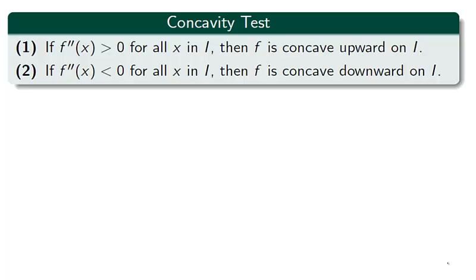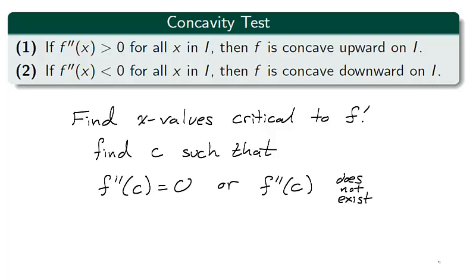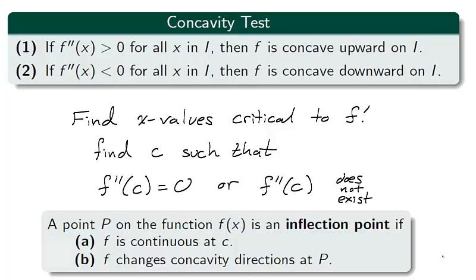To find intervals which are concave up and intervals which are concave down, we divide the domain of a function f into intervals whose endpoints are critical numbers of the first derivative — that is, those x values c in the domain which make the second derivative zero, or for which the second derivative does not exist. Points whose x values are local maximum or local minimum on the graph of the first derivative are called inflection points. These are the values at which concavity changes from negative to positive, or positive to negative.